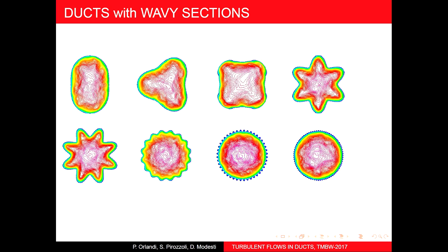The hydraulic diameter is used in the bulk Reynolds number, but I am not completely convinced it is the most important length scale. All our simulations are run with the same cross-sectional area. There is a paper suggesting that the area-based length scale is more important than the hydraulic diameter, and that is the reason we keep the area constant across configurations.